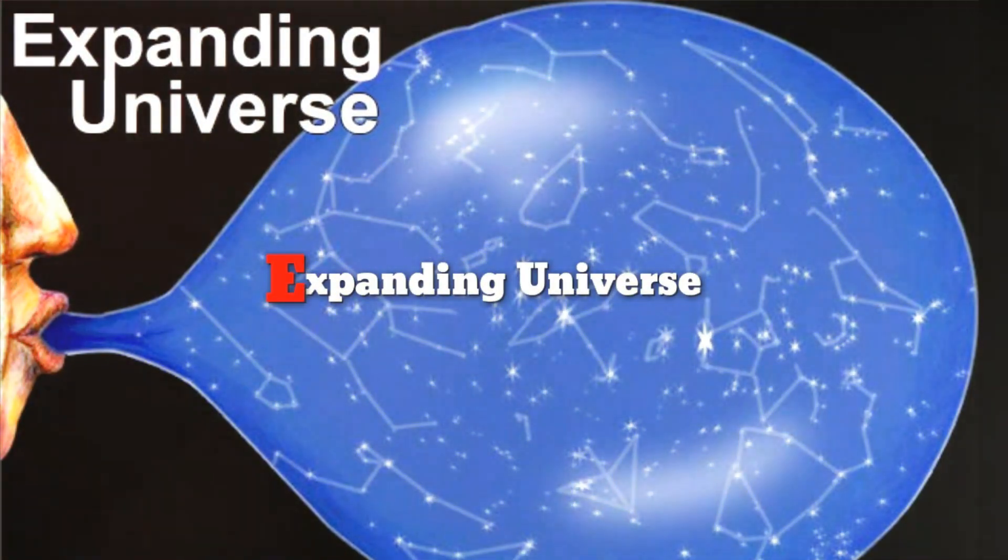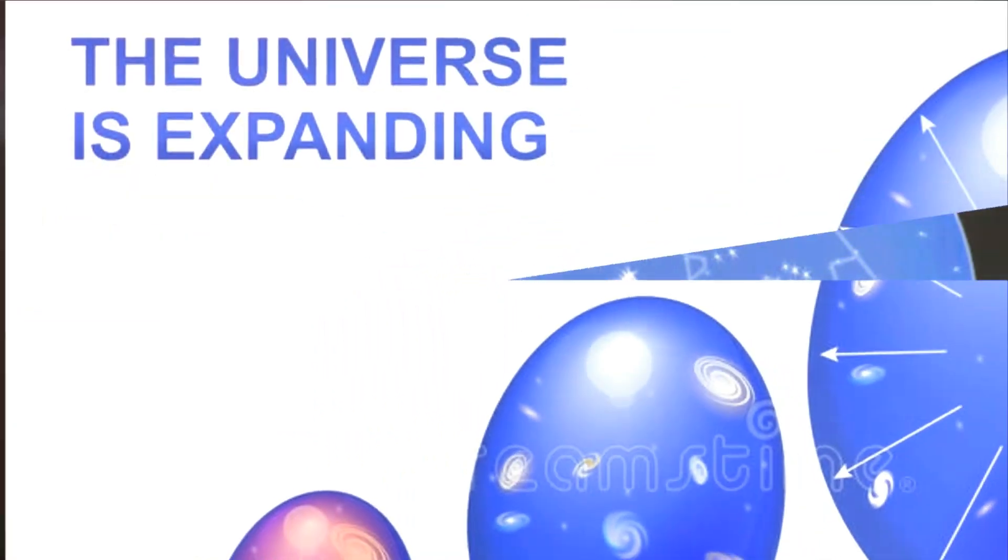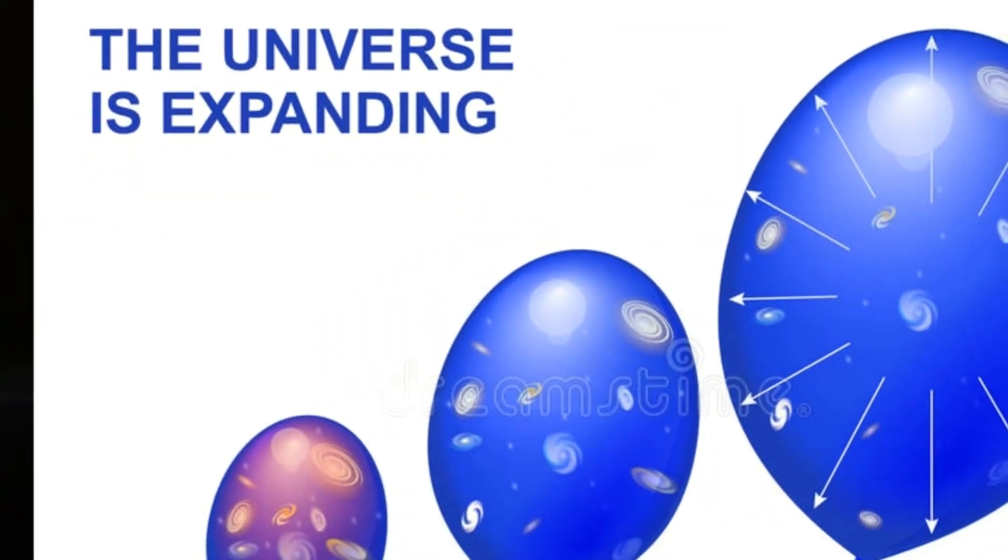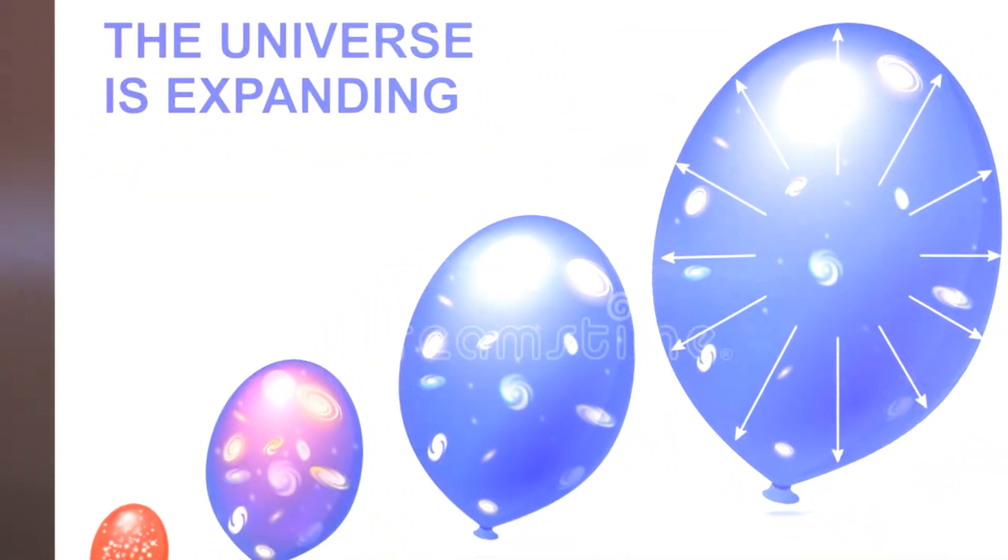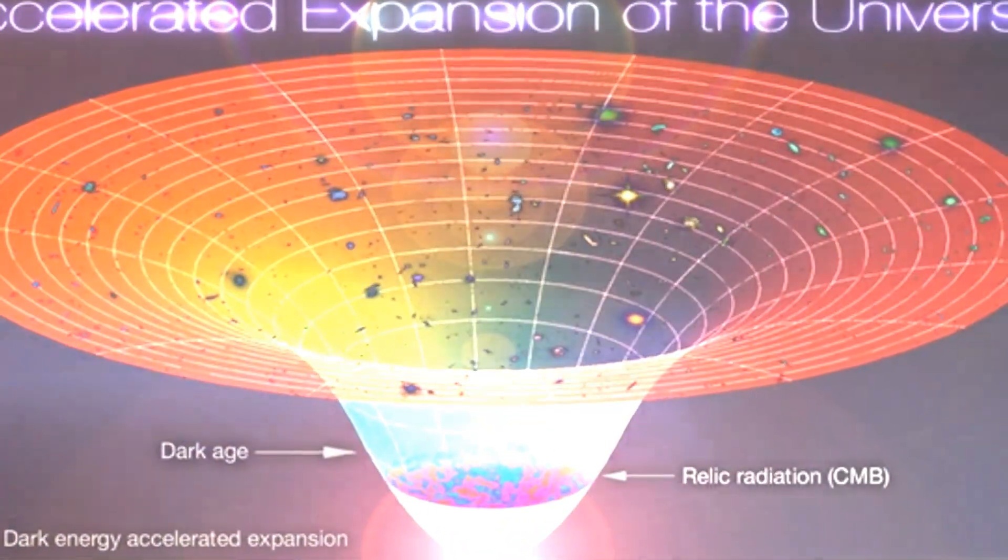Number six: Expansion of the universe. The expansion of the universe is the increase in the distance between two distant parts of the universe with time. This expansion doesn't require space to exist outside the intergalactic space. Instead, it is the metric governing the size and geometry of the space-time itself which changes.